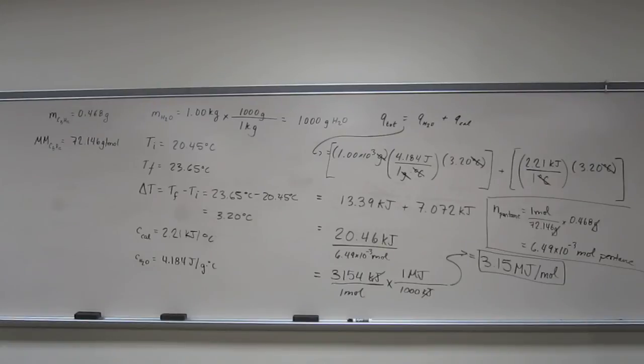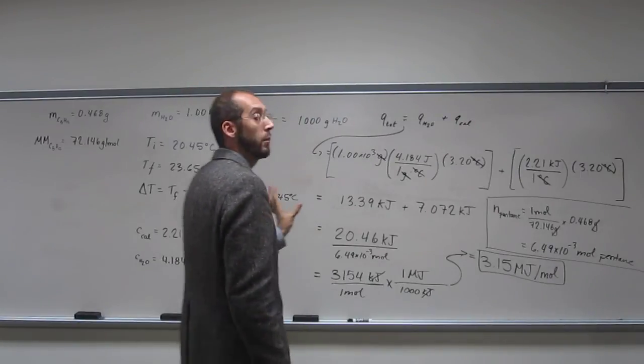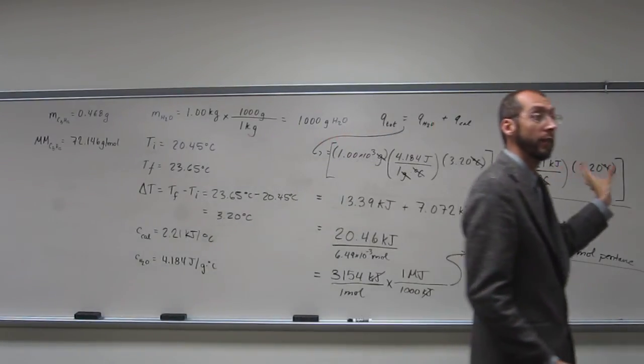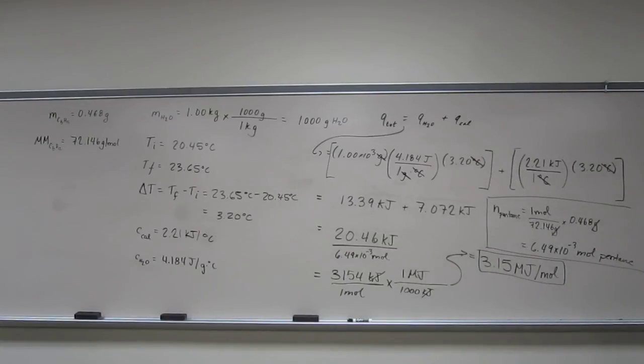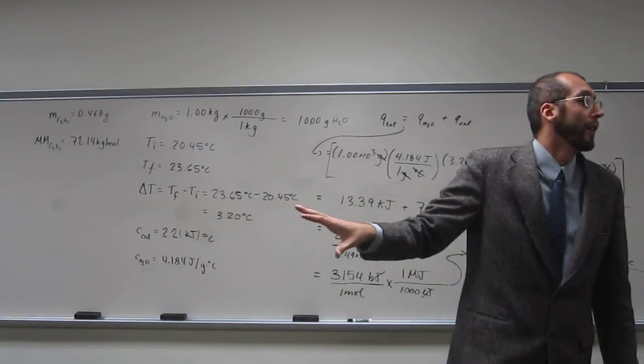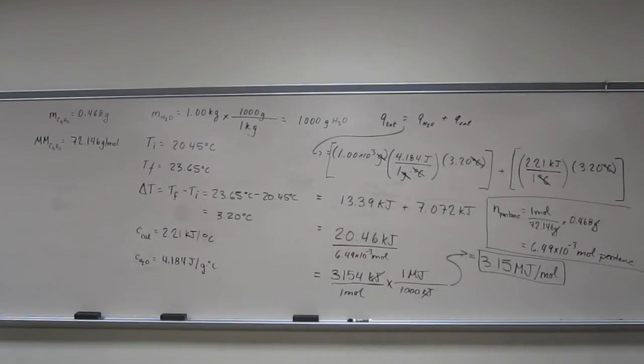So why didn't you put the mass of pentane into that first when you're doing the Q of H2O plus the Q of the calorimeter? Because it doesn't matter. Because this bomb calorimeter, it's not like the coffee calorimeter. It's just you're measuring the heat that's given off by the sample that's absorbed by the calorimeter and the water itself. This is effectively a different type of problem than those coffee cup calorimeter problems. So remember, it'll say bomb calorimeter to allow you to know. Any other questions? That was a good one.